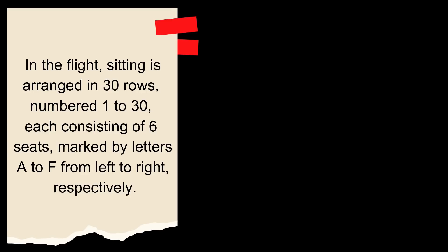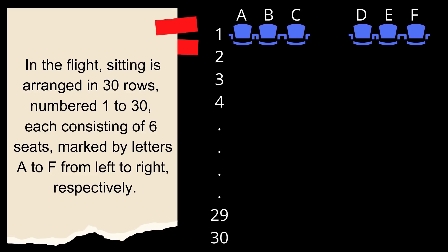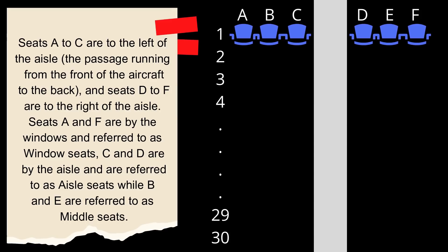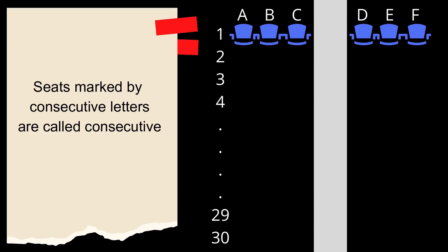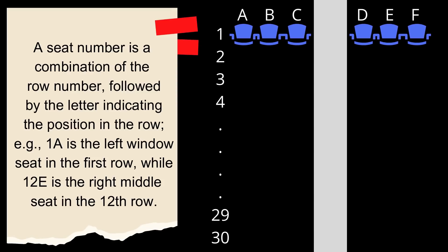In the flight, sitting is arranged in 30 rows, numbered 1 to 30, each consisting of 6 seats marked by letters A to F from left to right respectively. Seats A to C are left of the aisle and D to F are on the right of the aisle. Seats A and F are by the windows and are referred to as the window seats. C and D are by the aisle. I'm reading it fast because I'm realizing it's similar to how it's in the plane as well. 1A will be a window seat in the left first row. Got it.